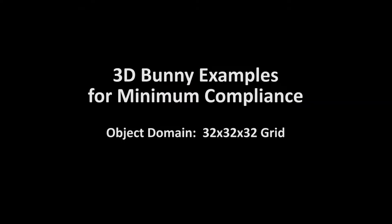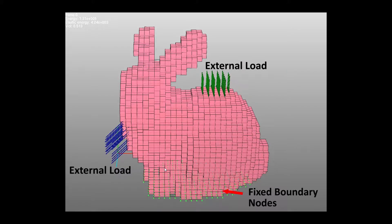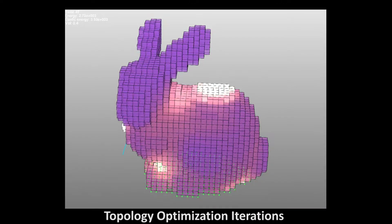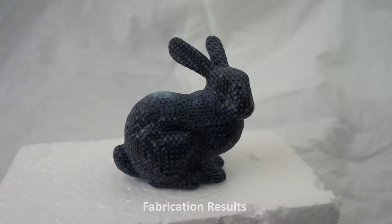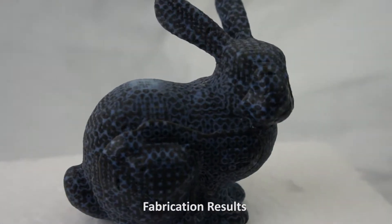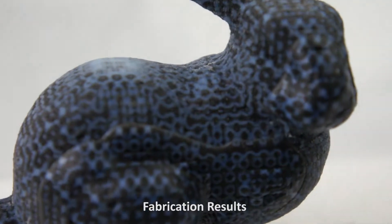We show an example of our topology optimization algorithm for minimum compliance on a Stanford bunny with two external loads. We show the 3D printed result with mapped microstructures from optimized material distribution.